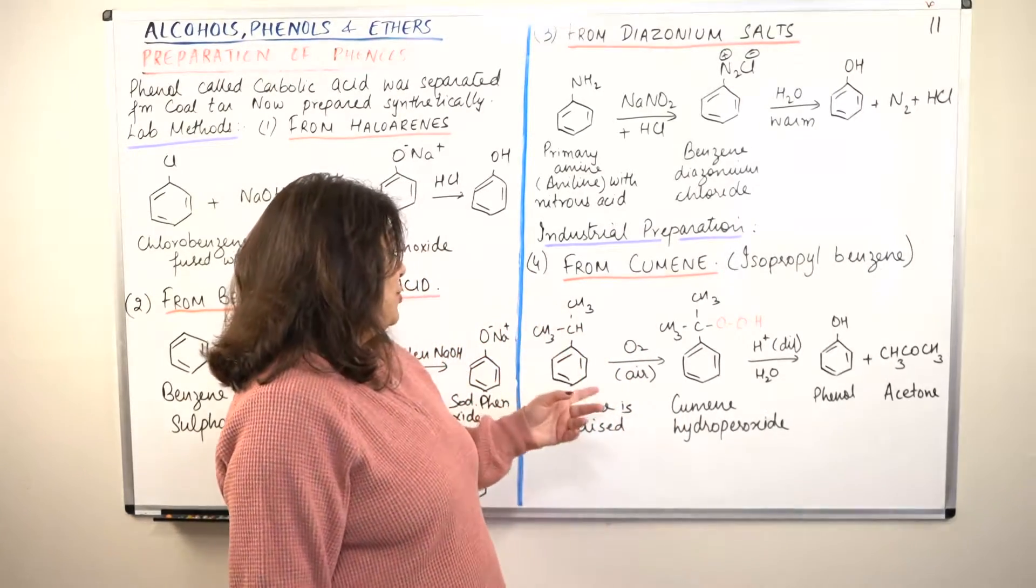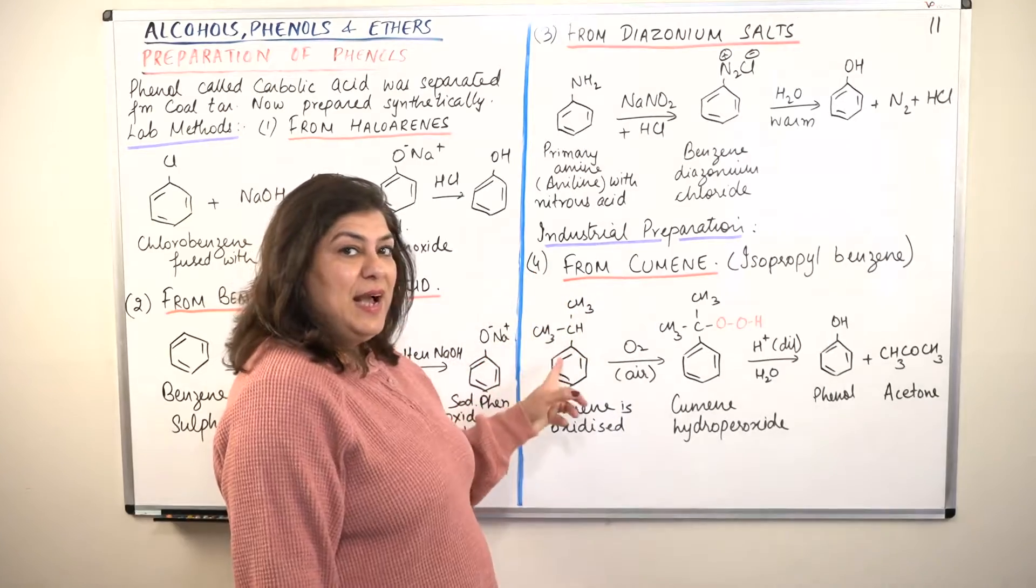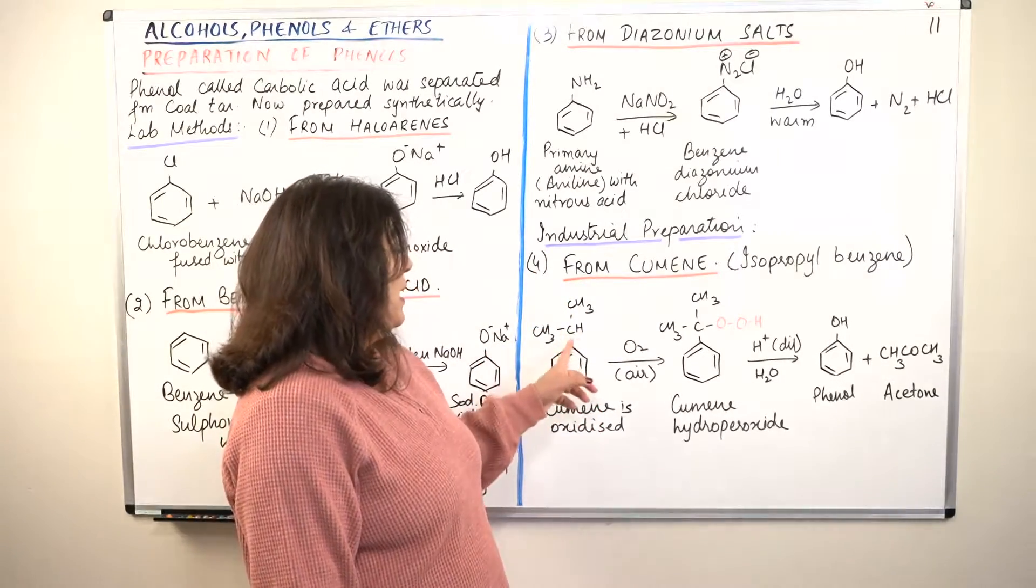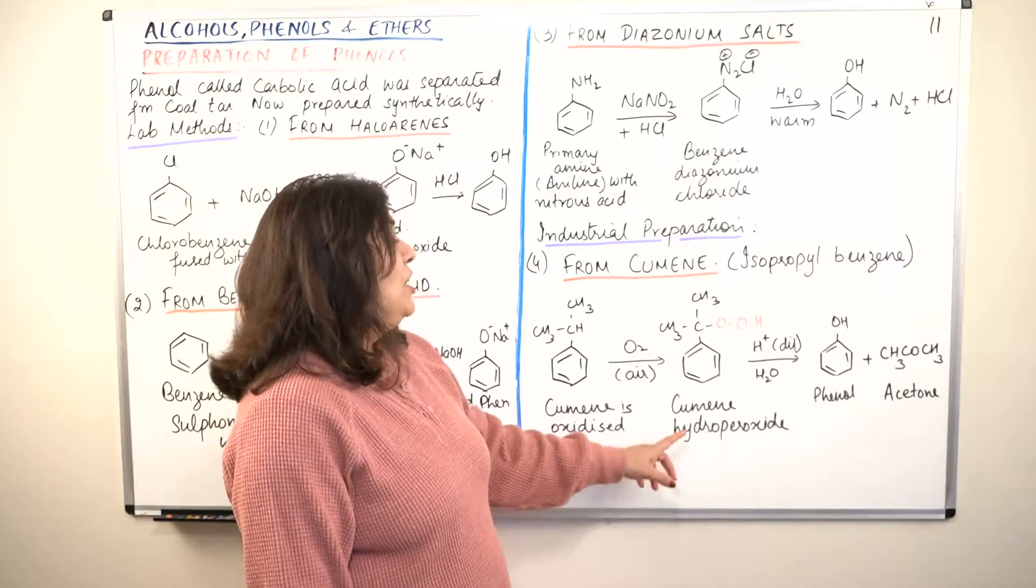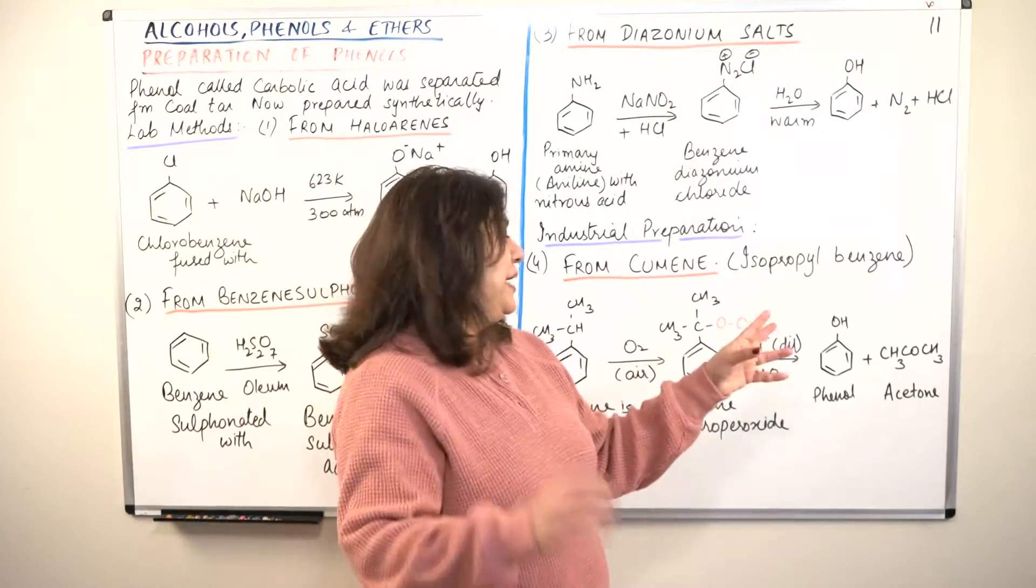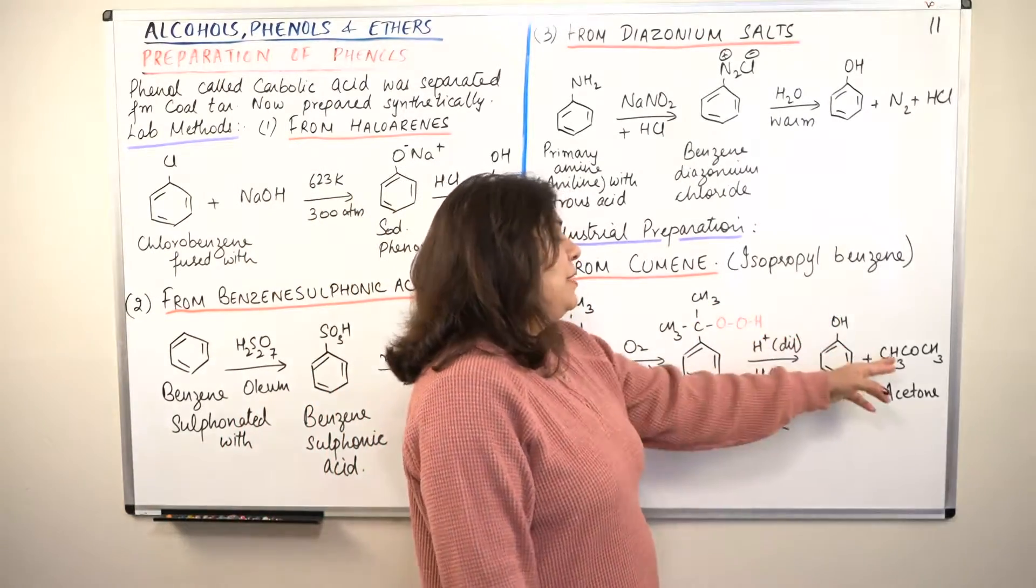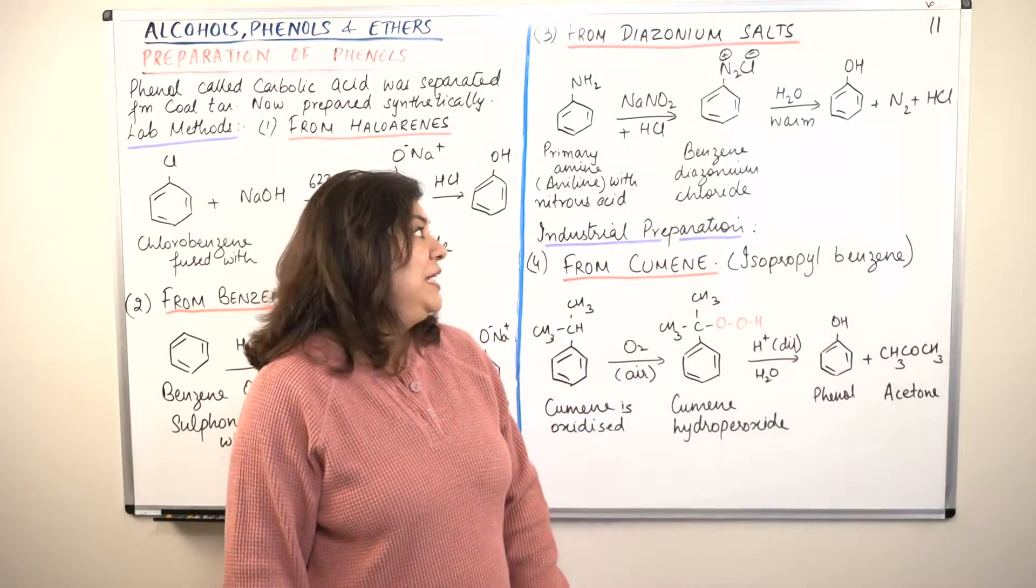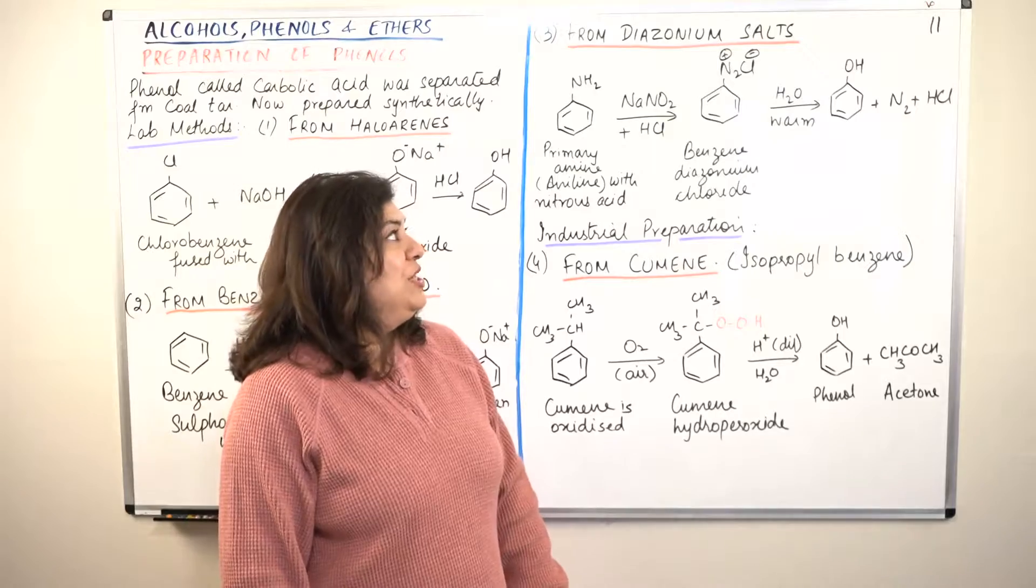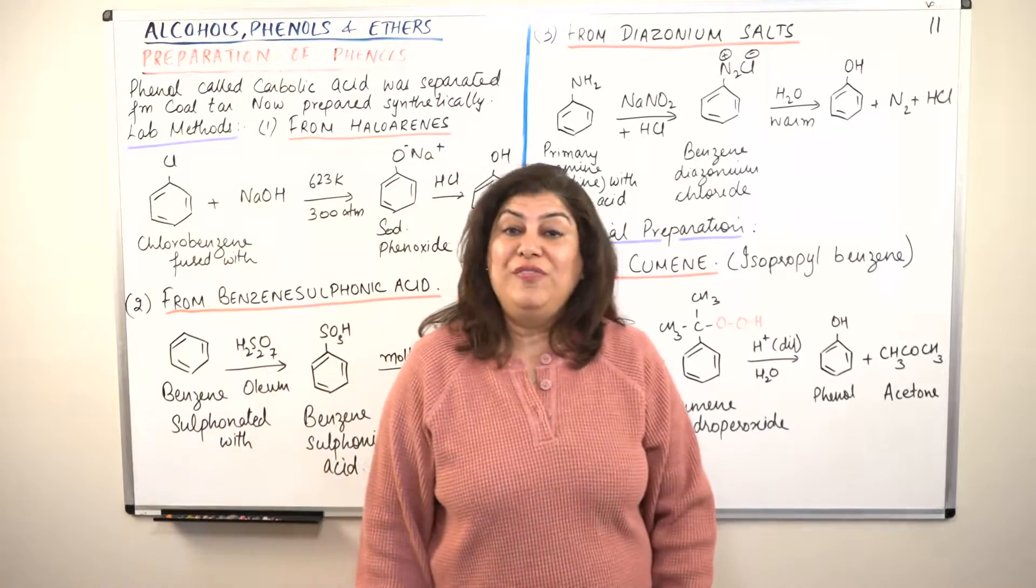So just revise it. Cumene is isopropyl benzene. Isopropyl benzene reacts with oxygen to give you cumene hydroperoxide. Cumene hydroperoxide then breaks down to give you phenol and a byproduct that is acetone when it is treated with dilute acid. So these were the different methods of preparation of phenol.